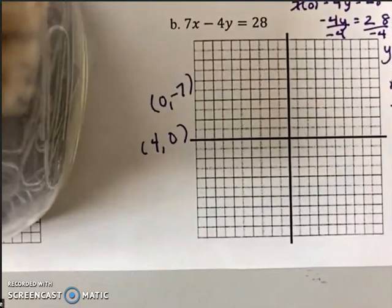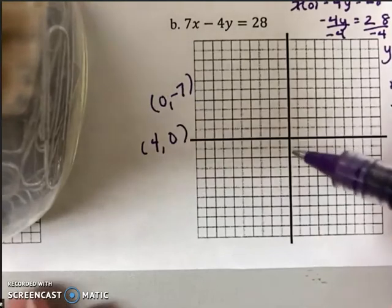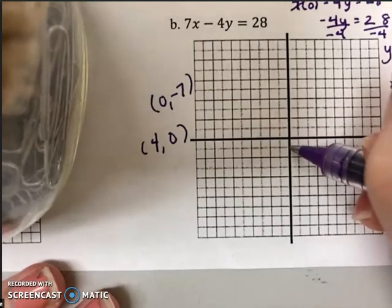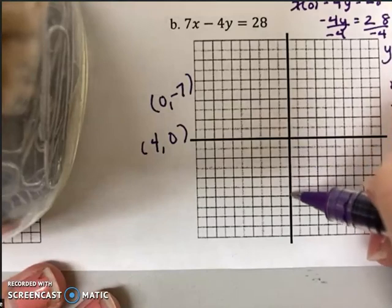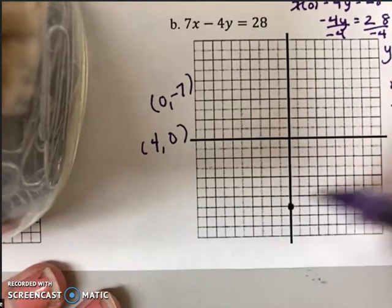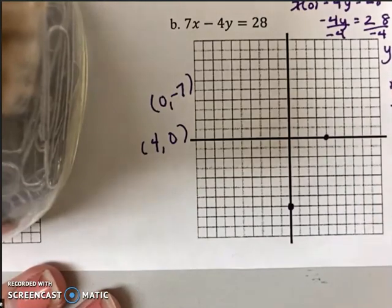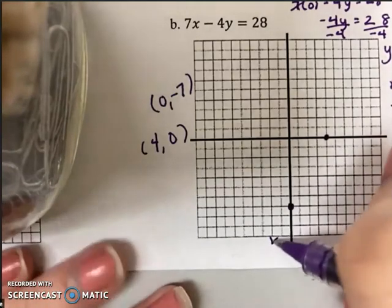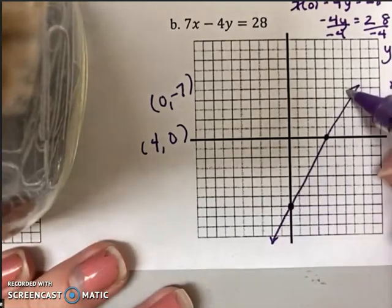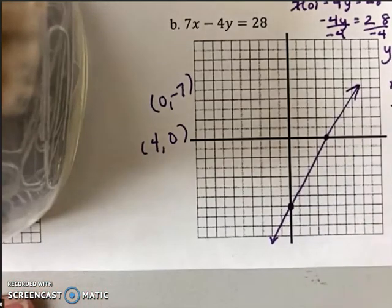All right, well, so to graph any linear function, all we need are two points. We have that. 0, negative 7. 1, 2, 3, 4, 5, 6, 7, that's right here. And 4, 0 is 1, 2, 3, 4, right here. All we have to do at this point is connect the dots. There's my linear function.